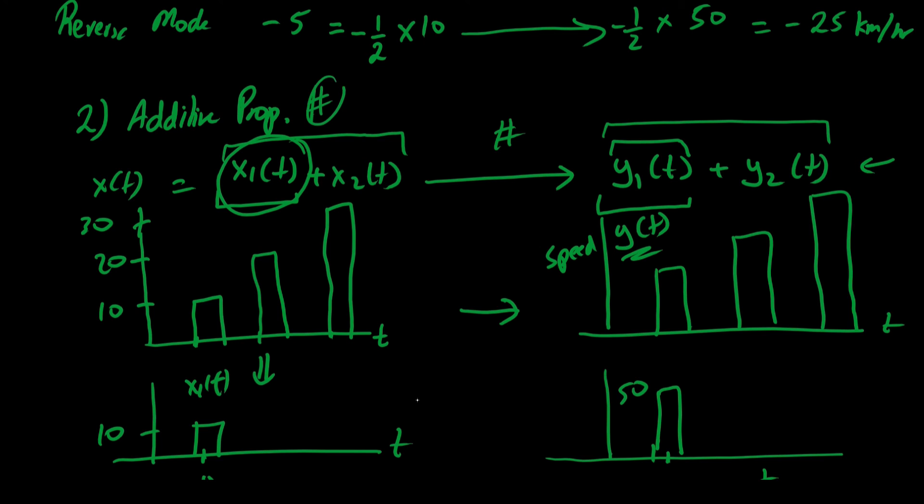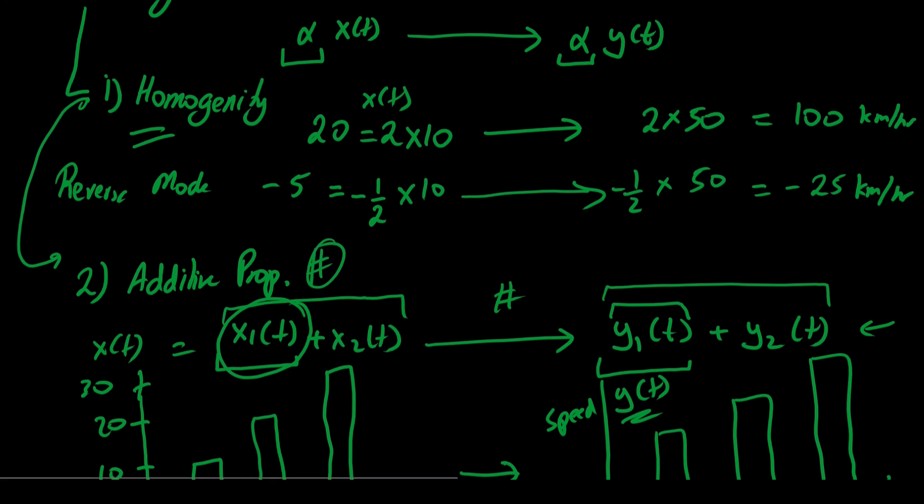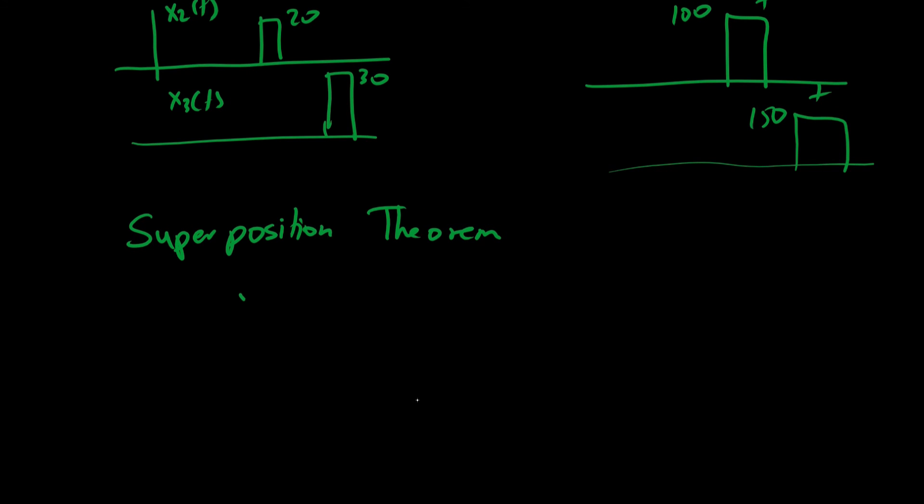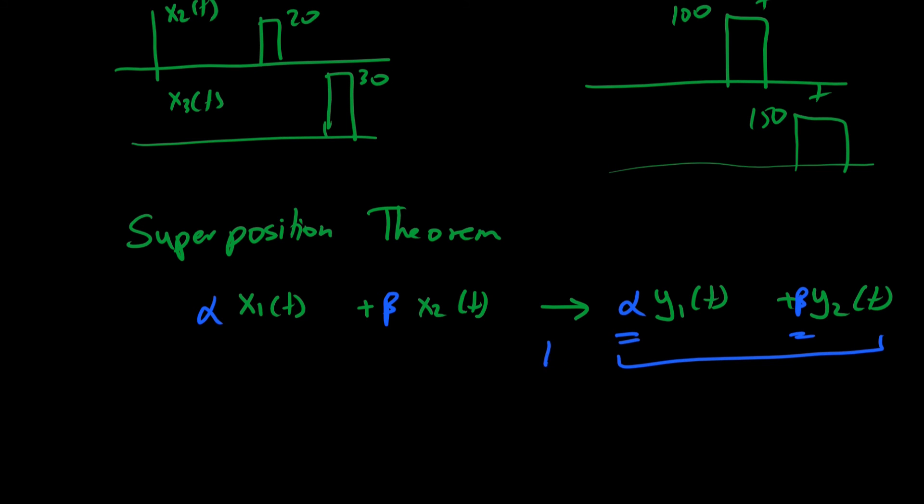So this defines the additive property. Now combining these two properties together we have something which we call the superposition theorem. This is simply: we have α·x₁(t) + β·x₂(t) linked with α·y₁(t) + β·y₂(t). This is from the additive property and from the homogeneity property. That is, the weighted sum of responses of the system to the weighted sum of signals.